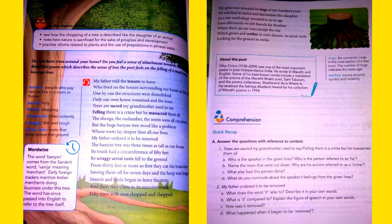So first they cut the branches, sawing them off for seven days and the heap was huge. Insects and birds began to leave the tree and then they came to its massive trunk. 50 men with axes chopped and chopped. The great tree revealed its rings of 200 years. We watched in terror and fascination this slaughter as a Roman mythology revealed to us its age.